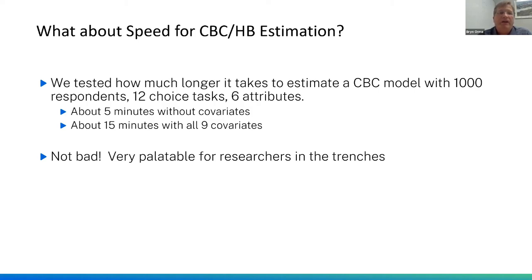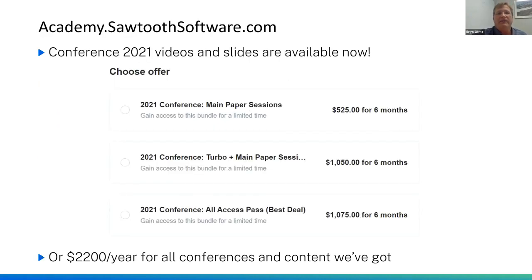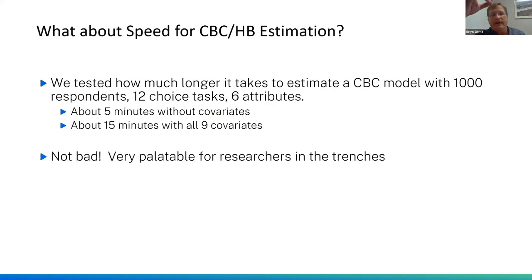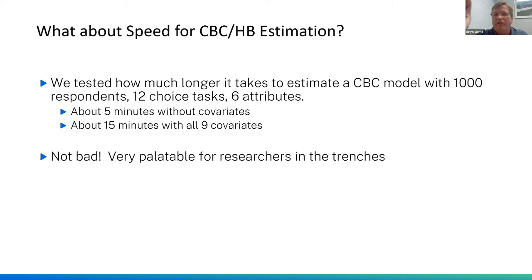They also looked at ensembles of HB models — running nine models with each covariate one at a time, one model with all nine simultaneously, and one plain vanilla model — then averaging across all 11 to make market share predictions. This gave even stronger predictions of out-of-sample choice tasks and market share. Adding even all nine binary covariates simultaneously in Sawtooth Software's HB only triples the run time, so a typical five-minute CBC model becomes 15 minutes — very palatable. If these results hold, this is an extremely valuable addition to add at the front of every CBC questionnaire.